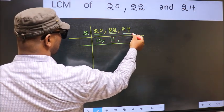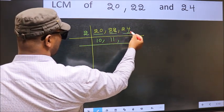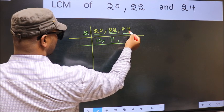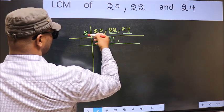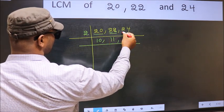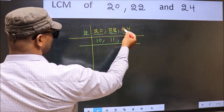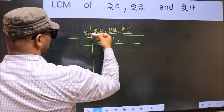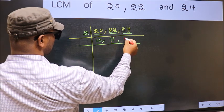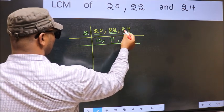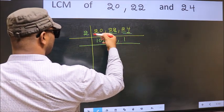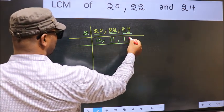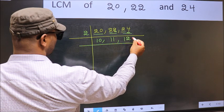Now the other number 24 — last digit 4, so this is divisible by 2. First number 2: when do we get 2 in the 2 table? 2 ones is 2. The other number 4: when do we get 4 in the 2 table? 2 twos is 4.